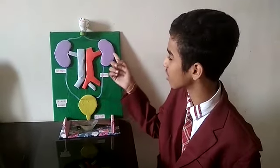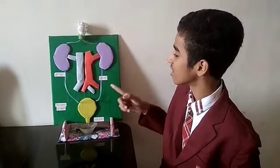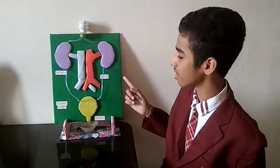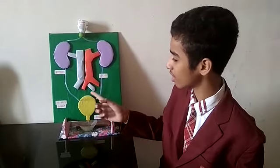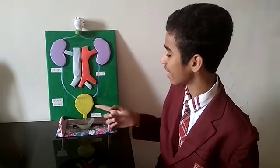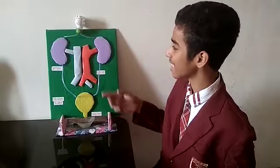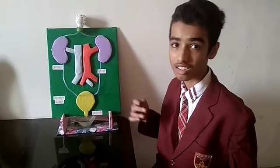These two vein shaped organs are the kidneys. This pair of tubes is the ureter. This elastic sac is the urinary bladder. And this tube is the urethra. Each kidney consists of a million nephrons.